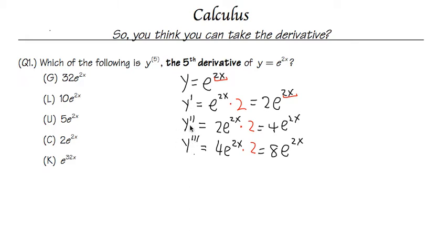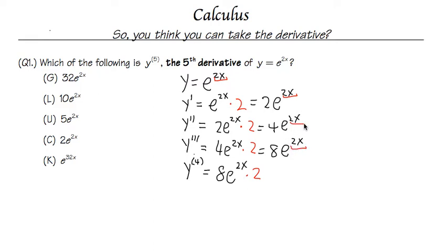Now for the fourth derivative — instead of four primes, I'll write it in parenthesis notation as y^(4), which is standard notation. Starting with 8e^(2x), we multiply by 2 because of the chain rule — the derivative of 2x is 2. So 8 times 2 is 16, giving us 16e^(2x).